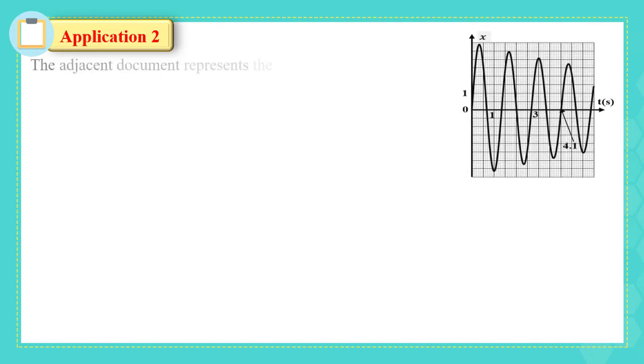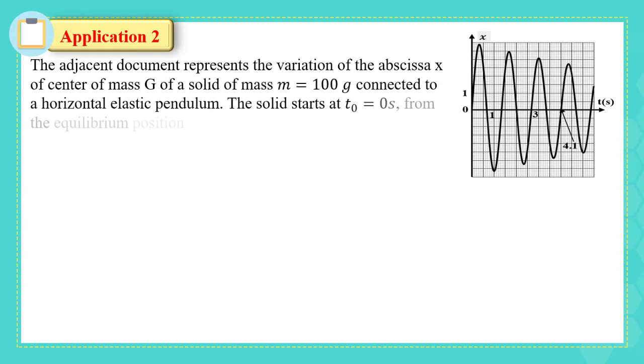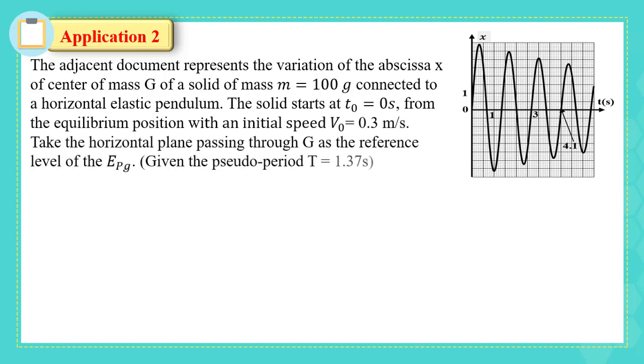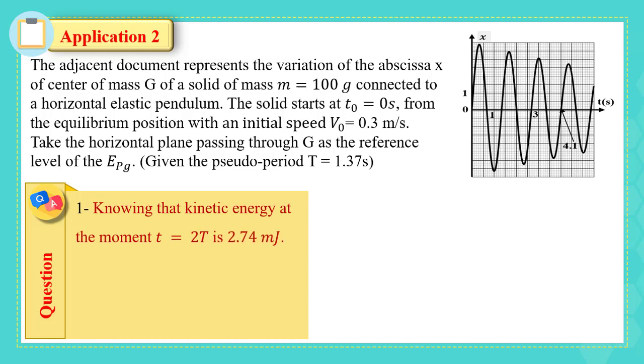Driven oscillations are periodic and they have a period equal to the proper period of the pendulum. Let's solve this application. The adjacent document represents the variation of the abscissa X of the center of mass G of a solid of mass M equals 100 grams connected to a horizontal elastic pendulum. The solid starts at T0 equals 0 seconds from the equilibrium position with an initial speed V0 equals 0.3 meters per second. Take the horizontal plane passing through G as the reference level of the gravitational potential energy and the pseudo period as 1.37 seconds. Knowing that the kinetic energy at the moment T equals 2 periods is 2.74 millijoules, determine the average power of the force required to derive the oscillations between 0 and 2 periods.